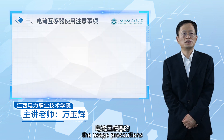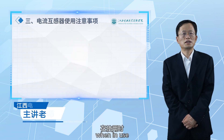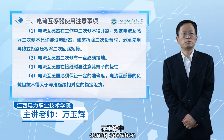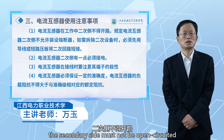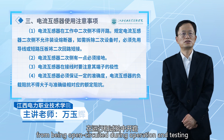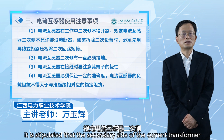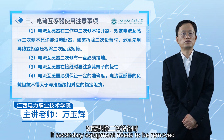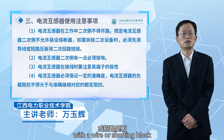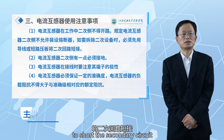Finally, we will introduce the usage precautions of current transformers. When using current transformers, the following points must be noted. During operation, the secondary side must not be open-circuited. To prevent the secondary side from being open-circuited during operation and testing, secondary equipment must not be fully removed. If full removal is necessary, it must first be short-circuited with a wire or shorting block to close the secondary circuit.